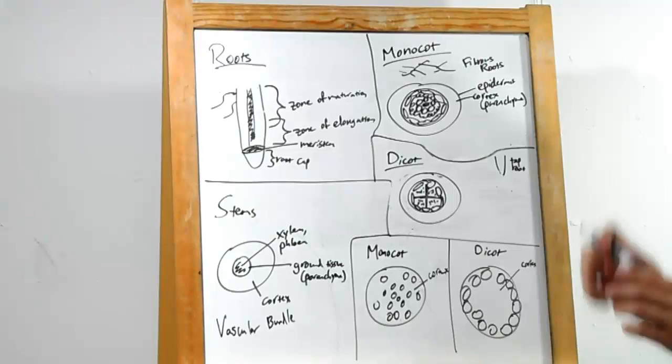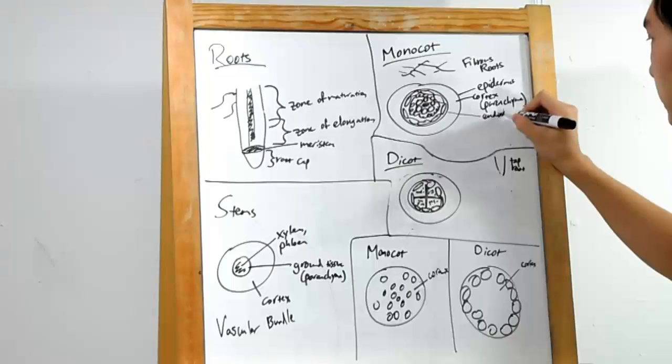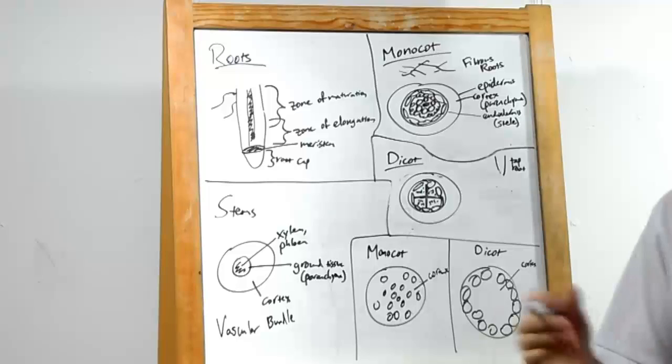All right, now we reach something known as the endodermis. This is interesting because it separates stele from the rest of the plant. No, they don't have metals in them. The stele is just the name for the center. And here's where the cool stuff happens.